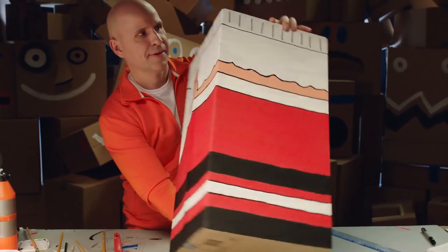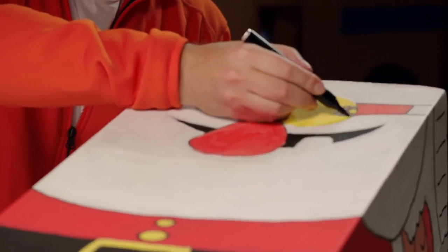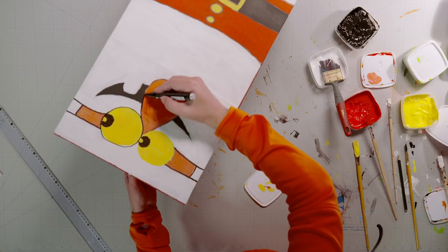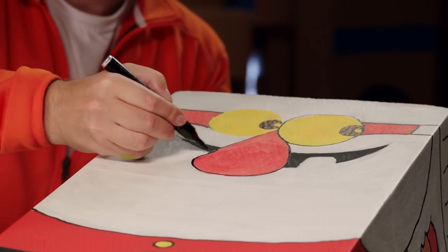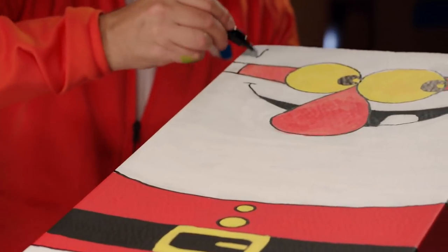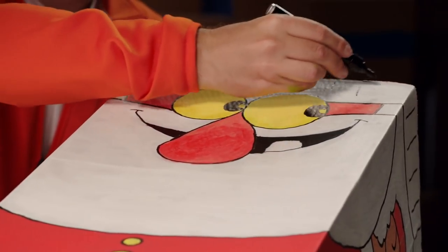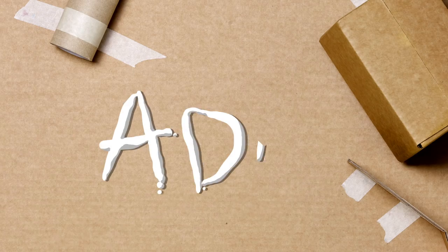Now we need to fix any of the lines we might have painted over. Use a marker pen or a brush dipped in paint. Finally, some details, like the texture on the edge of the Santa hat.